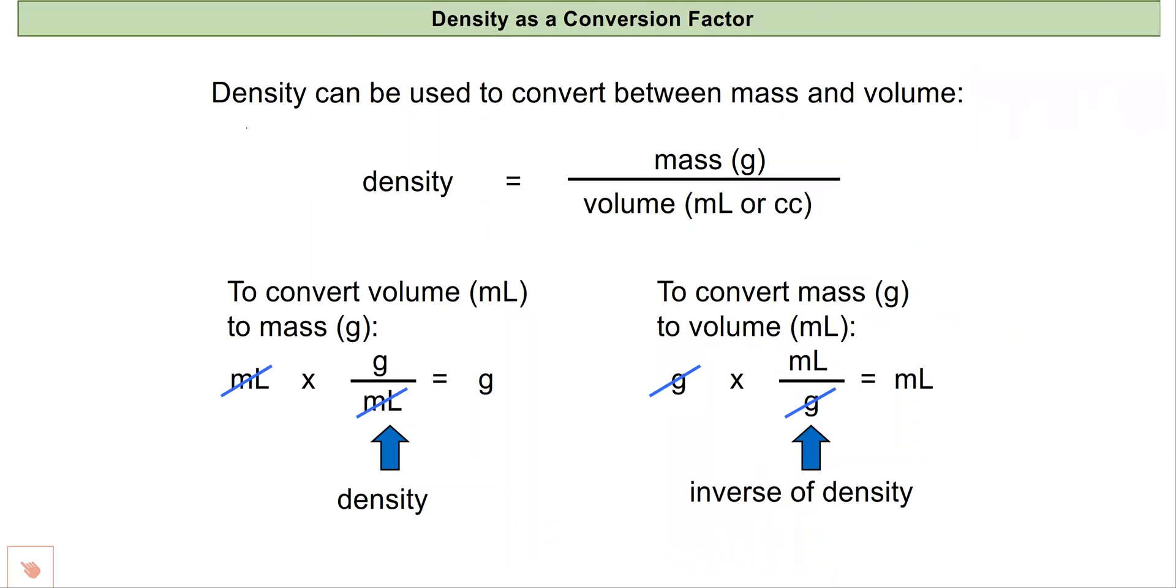We use density also as a conversion factor. It's set up so its units look like a conversion factor in its fraction format: grams per milliliter. We can also write density of water as an equality, that one gram of water is going to equal one milliliter of water.